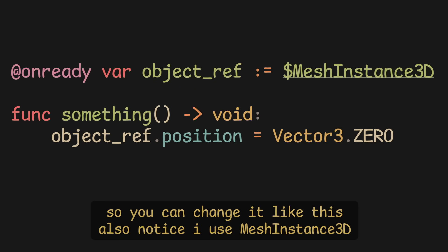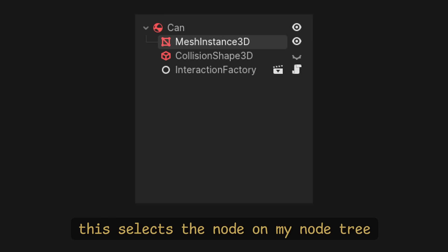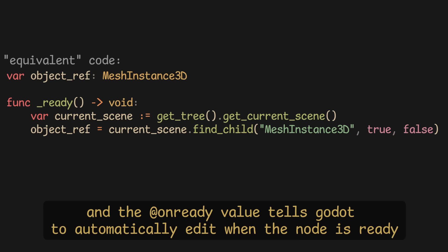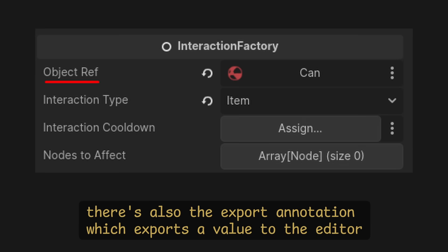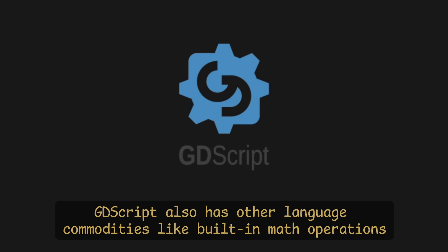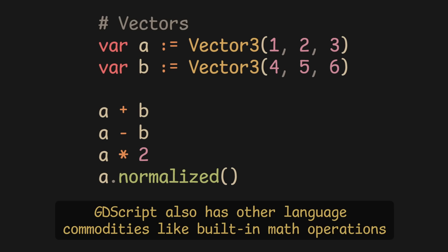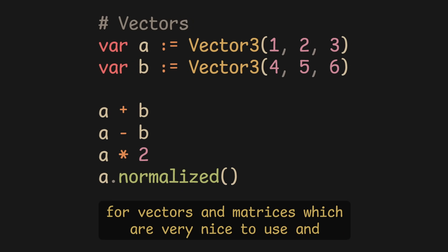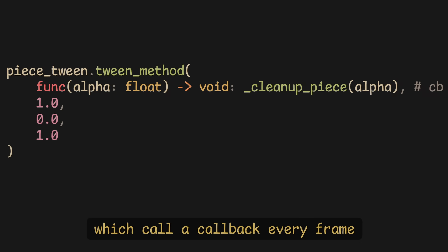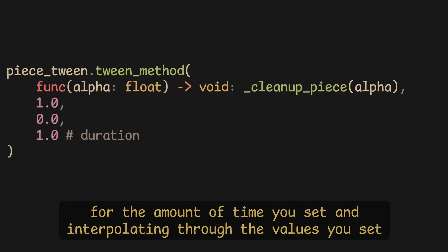Also, notice how I use MeshInstance3D — this selects the node on my node tree, and the onReady value tells Godot to automatically assign it when the node is ready. There's also the export annotation, which exports the value to the editor. Very useful to attach scenes or object references. GDScript also has other language commodities, like built-in math operations for vectors and matrices, which are very nice to use, and tweens, which call a callback every frame for the amount of time you set, interpolating through the values you set.